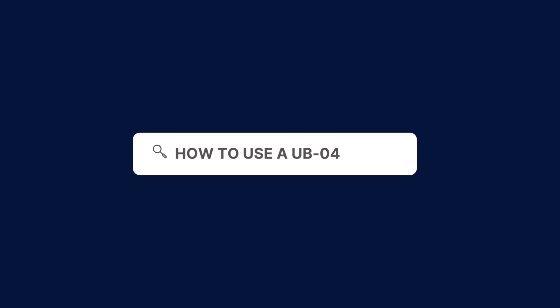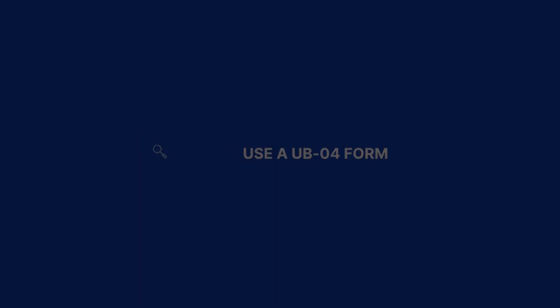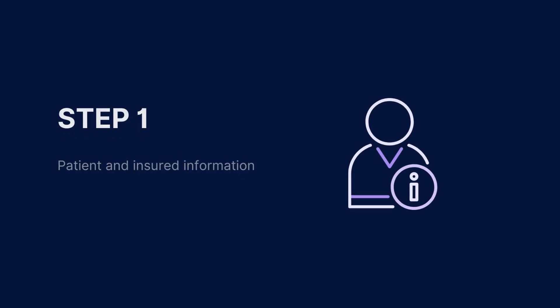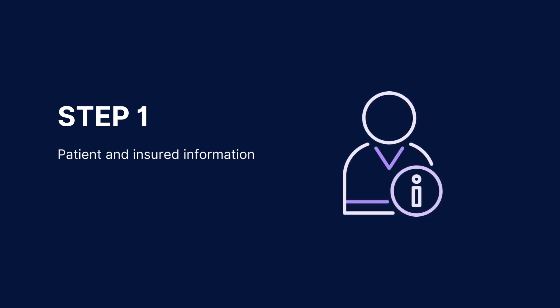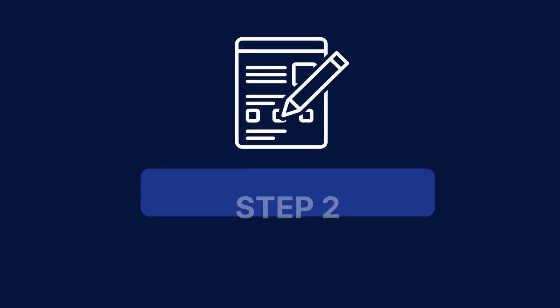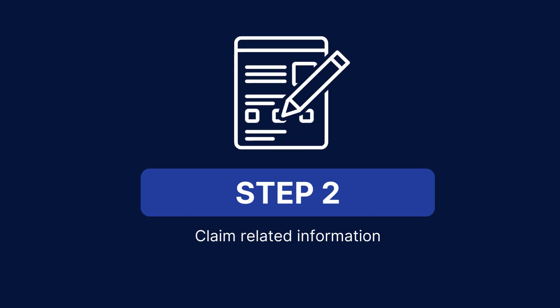To use our UB04 form, follow these steps. Download our UB04 form from the CarePatreon platform, which you can find in the link in the description. You must fill in the patient's personal and insurance details in this section. This includes the patient's name, address, birth date, and the insured's details if different from the patient.